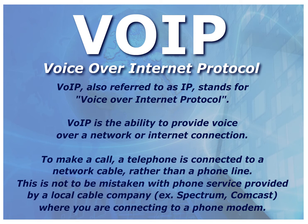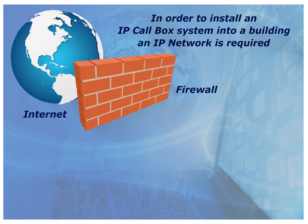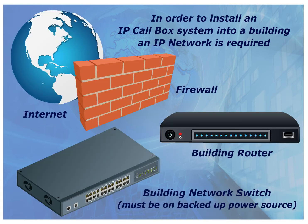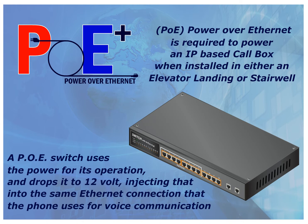In order to install an IP call box system into a building, you need an IP network with internet and a firewall, a building router, and a network switch. The building's network must also be on a backed-up power source. POE, which stands for Power Over Ethernet, is required to power an IP-based call box when installed either in an elevator landing or stairwell. A POE switch uses the power for its operation and drops it to 12 volts, injecting that into the same Ethernet connection that the phone uses for voice communication.